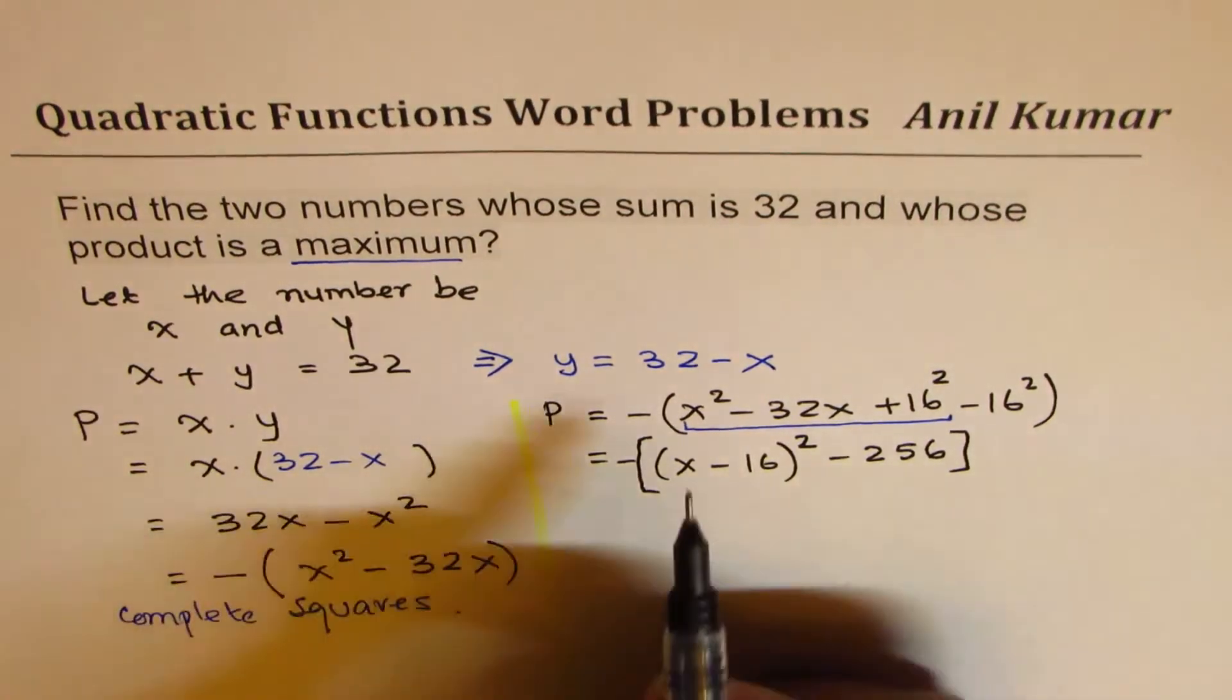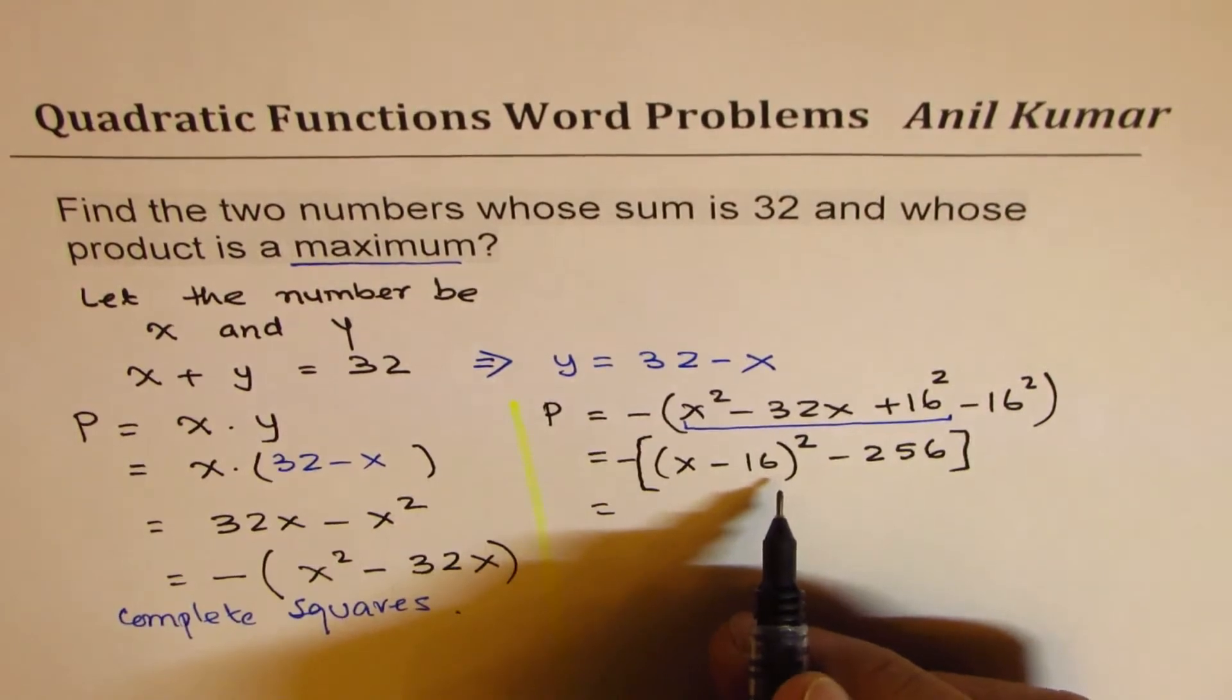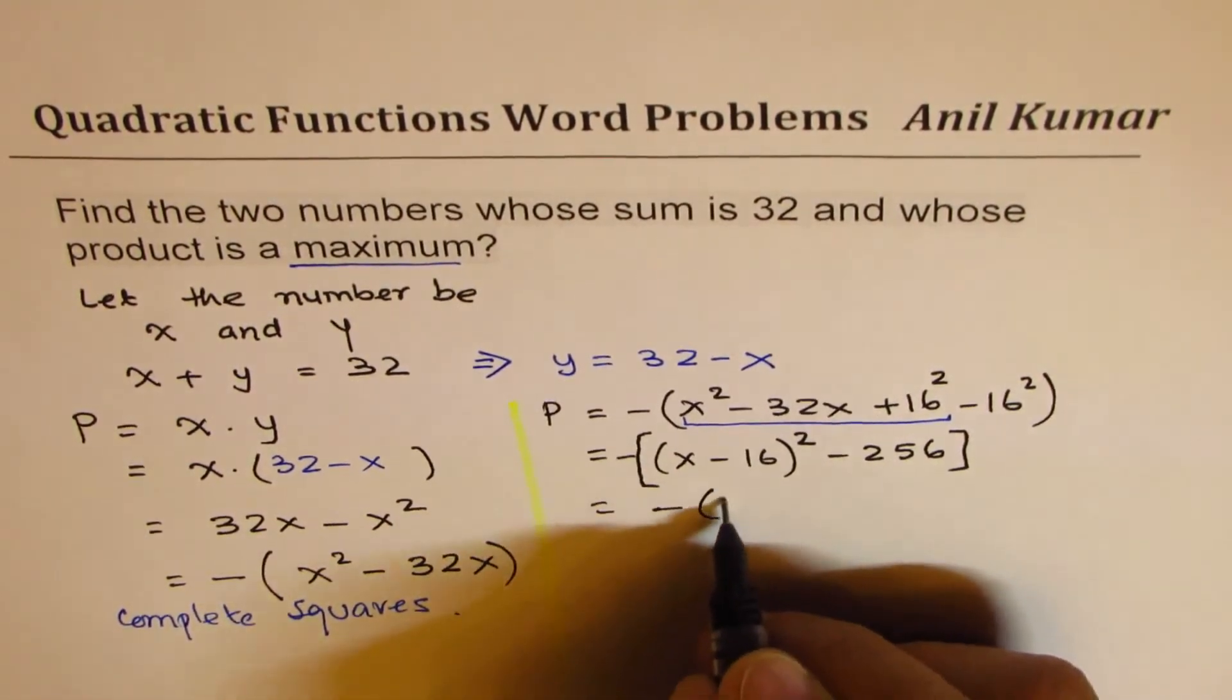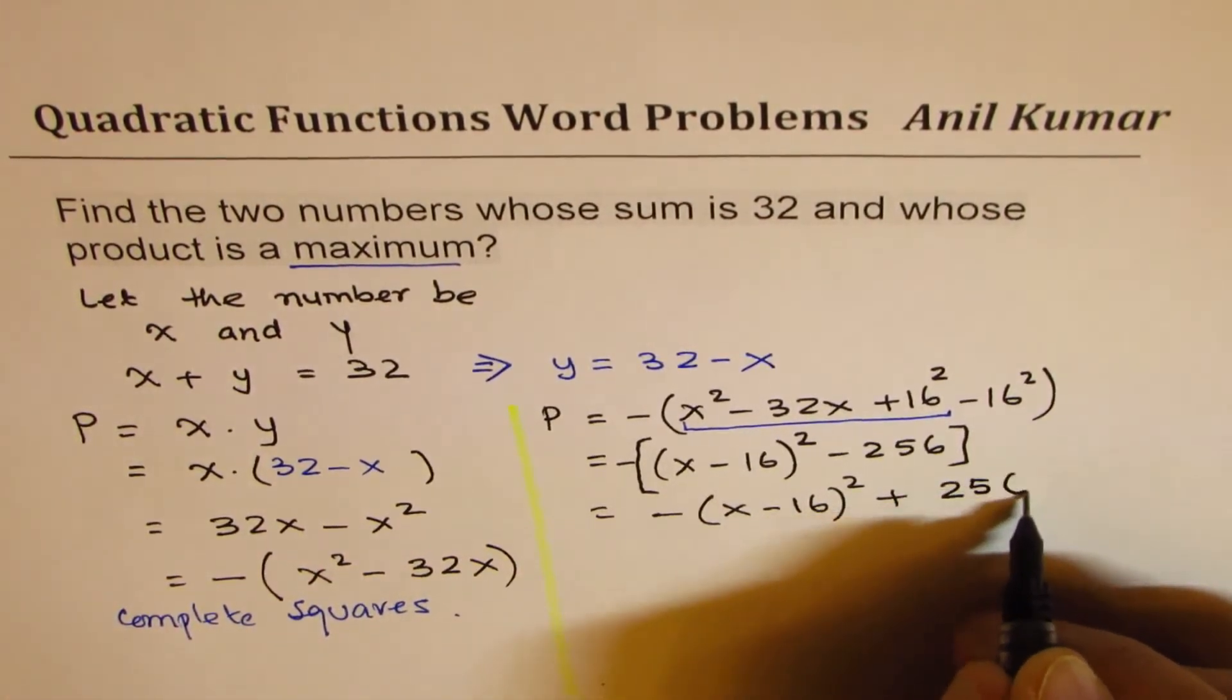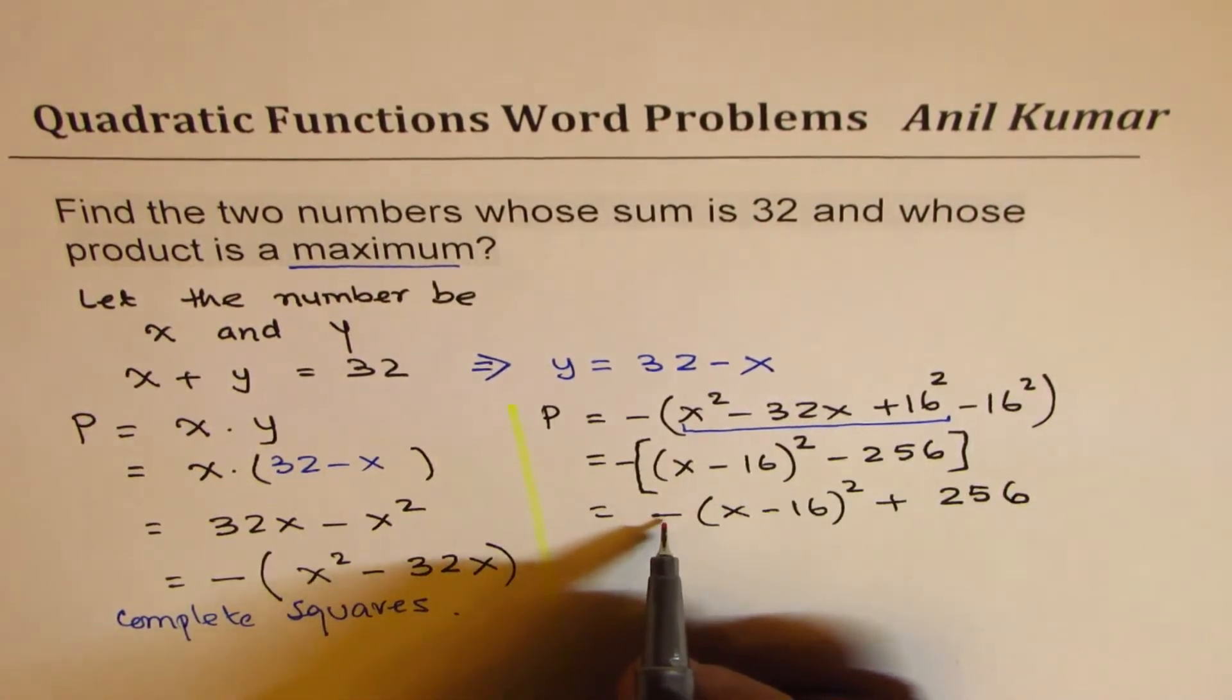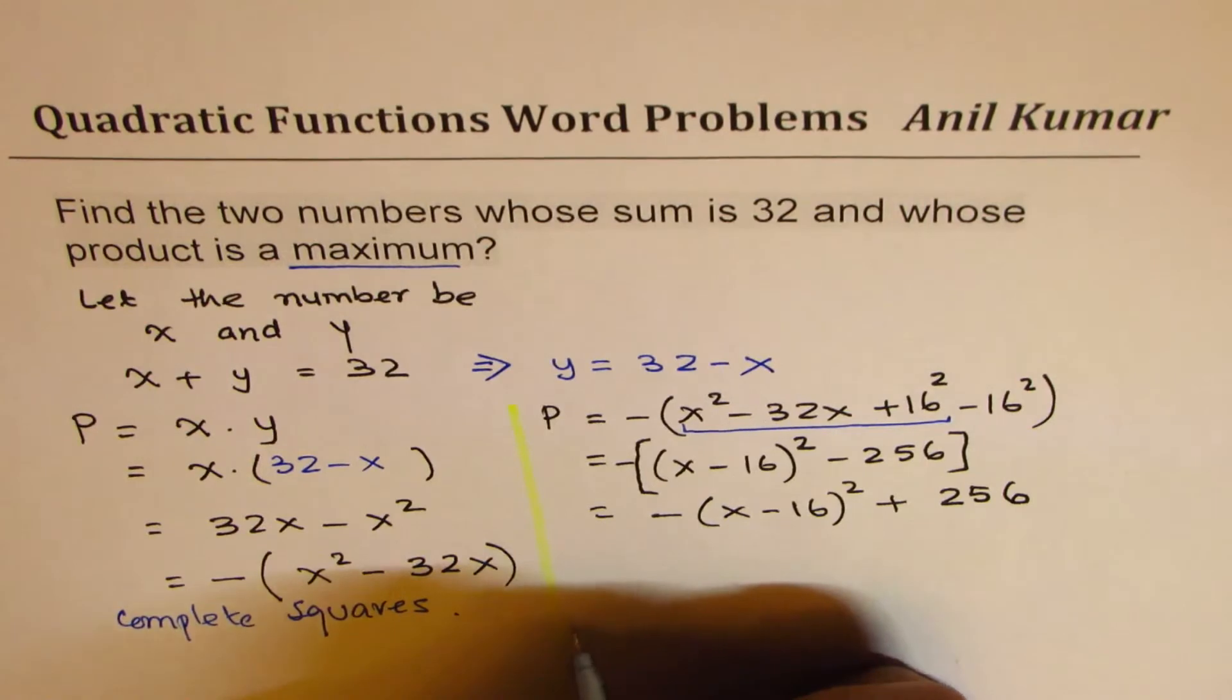It's a good idea to introduce square brackets since there are already another bracket here. Let's open the bracket now: minus x minus 16 whole square, and that becomes plus 256. Now that is a parabola in vertex form.